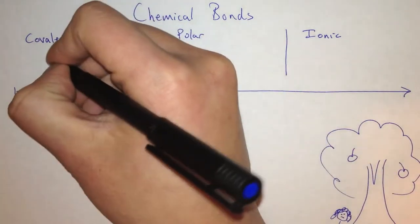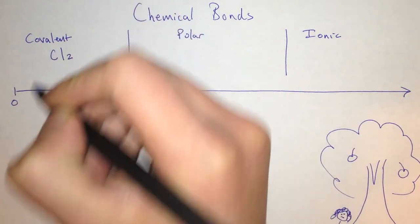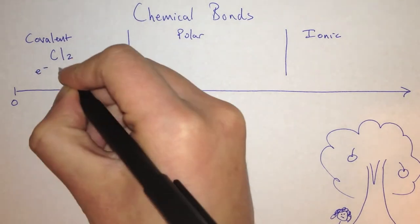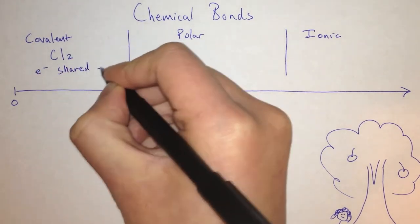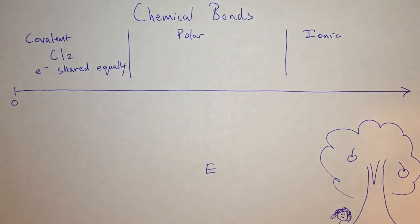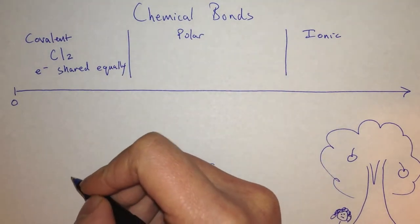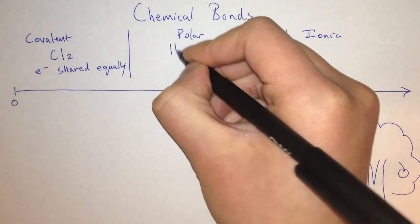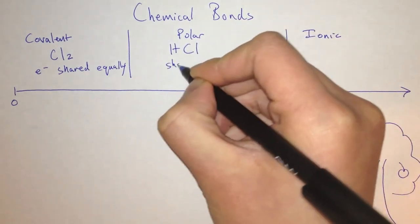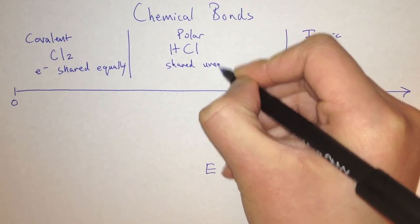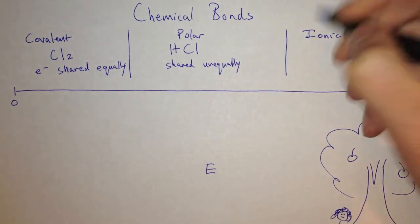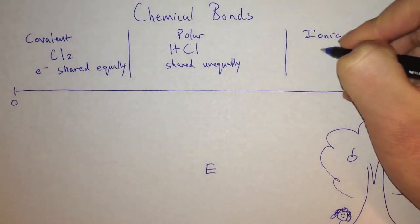Each one is different. In a covalent bond, for example Cl2, the electrons are shared equally. In a polar covalent bond, the electrons are shared unequally, for example HCl. And in an ionic bond, we say that the electrons are transferred.